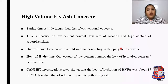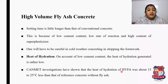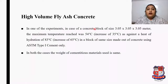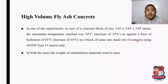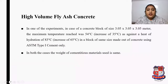Regarding heat of hydration, on account of low cement content, the heat of hydration generated is rather low. Investigations have shown that the heat of hydration of high volume fly ash concrete was about 15 to 25°C less than that of reference concrete without fly ash. In one experiment, for a concrete block of size 3.05 × 3.05 × 3.05 m, the maximum temperature reached was 54°C — an increase of 35°C — compared to 83°C, an increase of 65°C, in a block of the same size made with ASTM Type 1 cement only. In both cases, the weight of cementitious material used was the same.